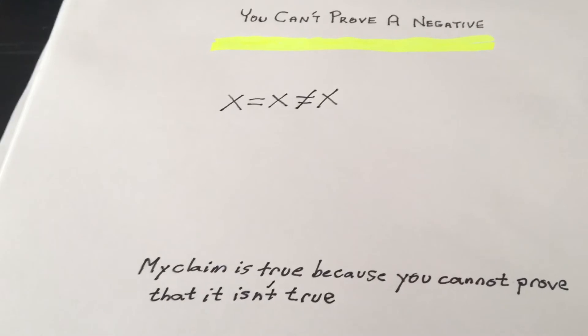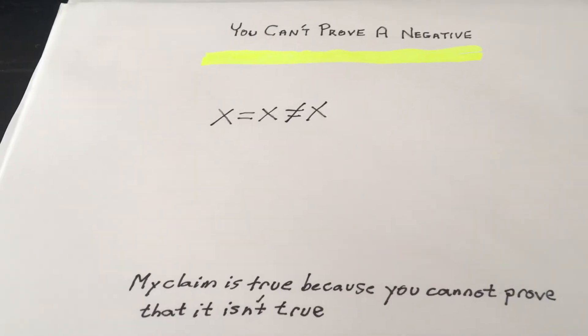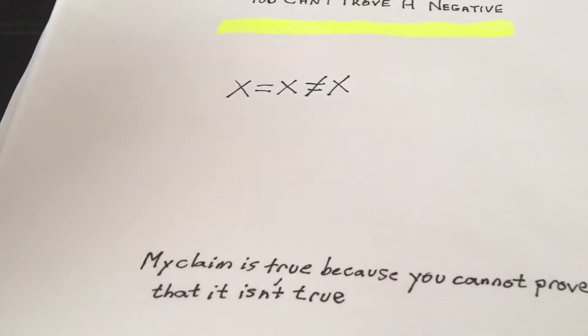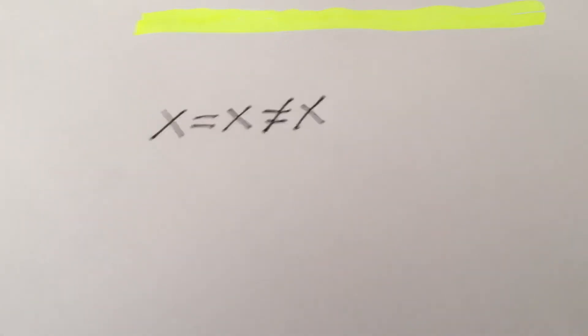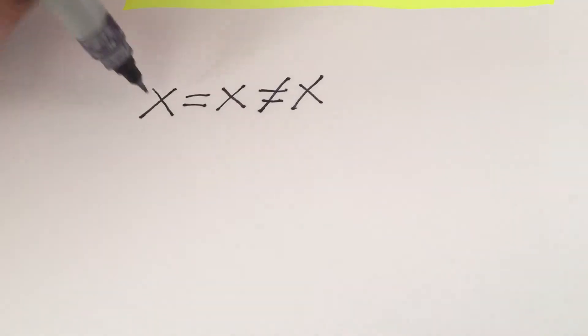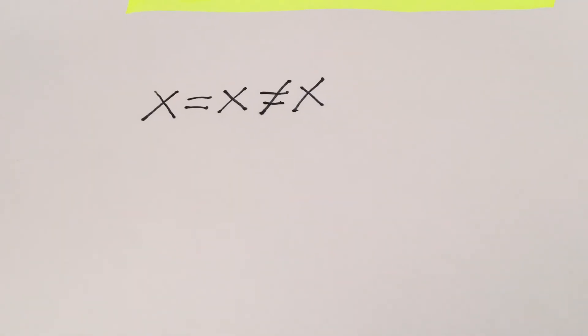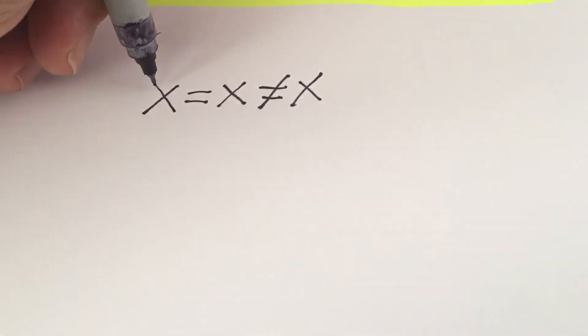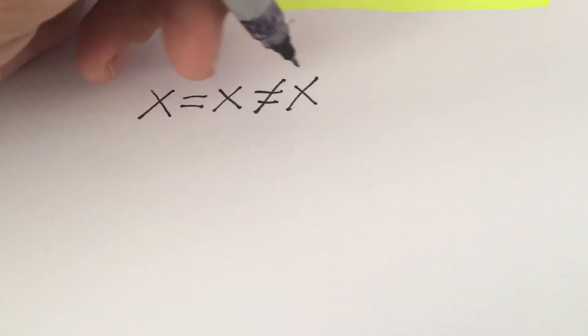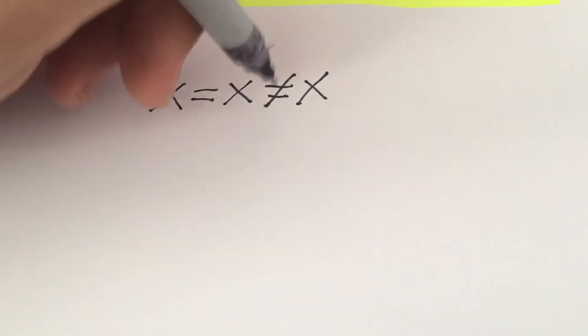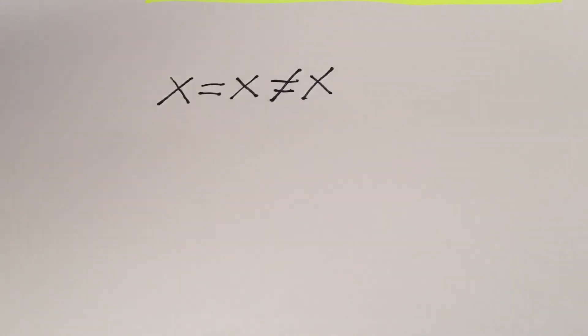So here you can see anybody who's past high school math will recognize just how this equation just doesn't, can't work, okay? You can't have a variable x has to always equal the exact same thing. Okay, in math, that's what it is. If it equaled anything else you'd use y or z or some other letter. So but you're saying your premise is true because you cannot prove it is not true. x is equal to x is not equal to x, that is a false mathematical statement. It has no meaning. It's like trying to divide by zero. Okay, it's undefined.